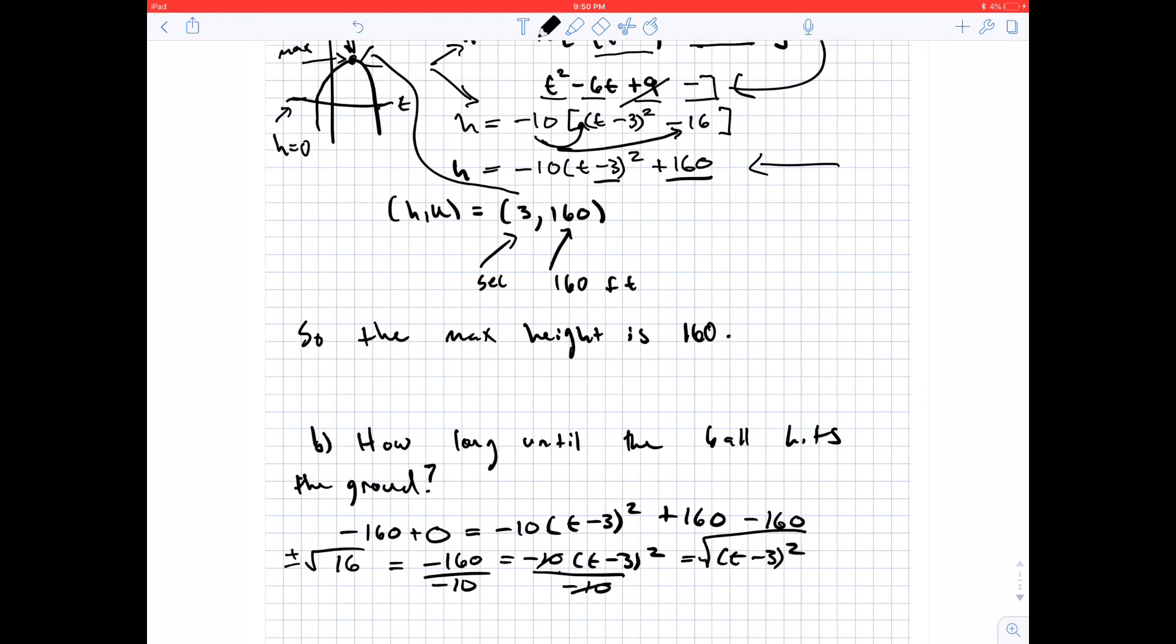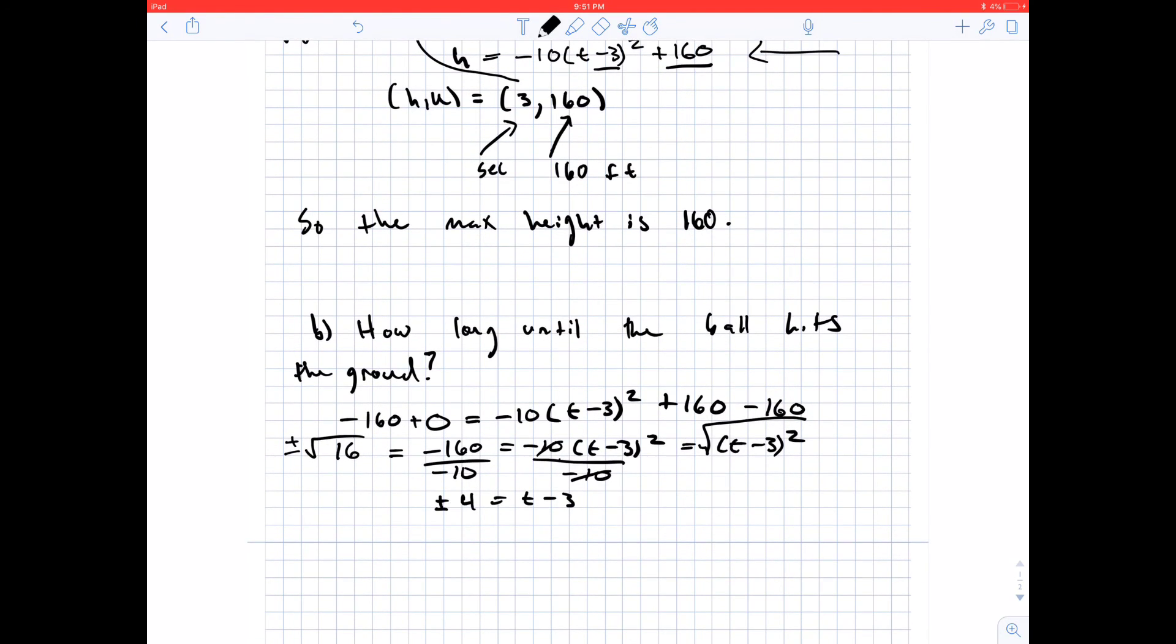I'm going to get plus or minus on the left side. And I'm going to get plus or minus 4 equals t minus 3. And so now what I can do to get t alone is add 3 to both sides. So I'm going to get t is equal to 3 plus or minus 4.